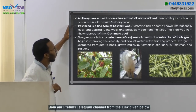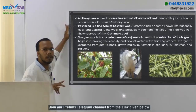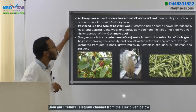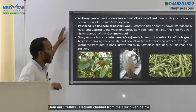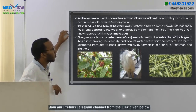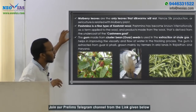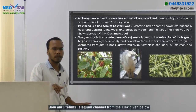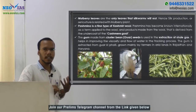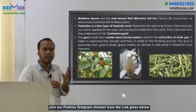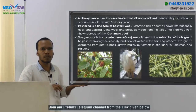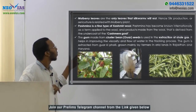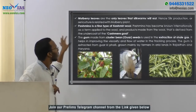Pashmina is a fine type of Kashmiri wool used to produce shawls and other cloths. Pashmina has become known internationally as a term applied to the wool and products made from it, derived from the undercoat of the Kashmiri goat. There are three to four subspecies of Kashmiri goat used in producing Pashmina.